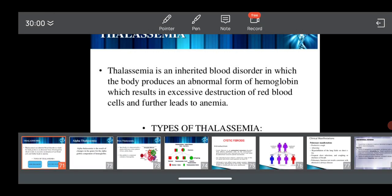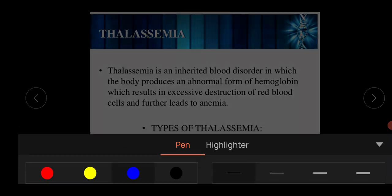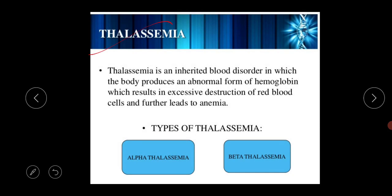Today's topic starts with thalassemia. Thalassemia is one kind of lethal disease. It is one kind of inherited blood disorder in which the body actually produces an abnormal form of hemoglobin.